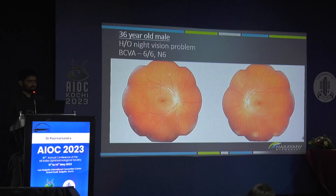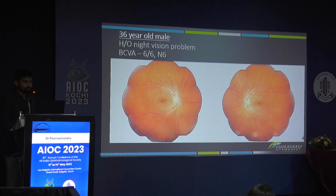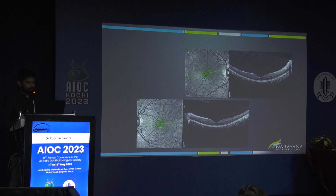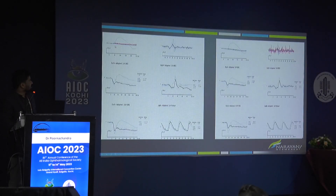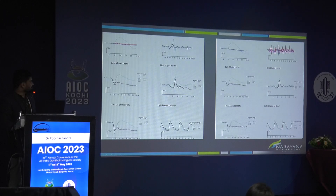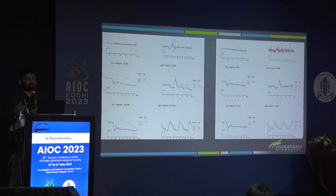One more patient: a 36-year-old with 6/6 vision, also with multiple fleck-like deposits throughout the fundus, but this patient had night vision problems — the earlier patient had no symptoms. OCT was again normal. Just look at the ERG: if you look at the combined responses, something interesting appears. The a-wave is formed, but the b-wave is not even reaching the baseline — it terminates early. This is the classical electronegative ERG.